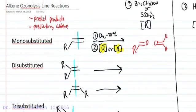For the reductive workup which involves either zinc metal and acetic acid or dimethyl sulfide, either one but not both, we're going to leave all the hydrogens intact. So these hydrogens that are not drawn in on our skeletal structure, they all stay intact.